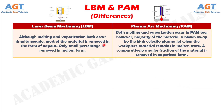Number 4: Although melting and vaporization both occur simultaneously, most of the material is removed in the form of vapor in Laser Beam Machining, and only a small percentage is removed in molten form. Whereas, both melting and vaporization occur in Plasma Arc Machining too; however, the majority of the material is blown away by the high velocity plasma jet while the workpiece material remains in molten state, and a comparatively smaller fraction of the material is removed in vaporized form.